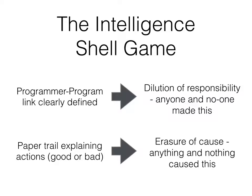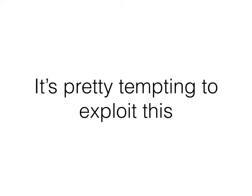No one's really sure where a machine learning system comes from or whose responsibility it is. And this paper trail of explaining why something happened or why an output was chosen has now gone. We don't know why things were caused, what things were caused by — we don't know why a system has decided to act in a certain way.